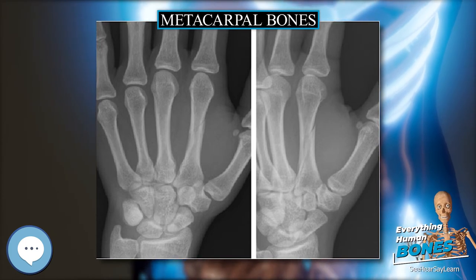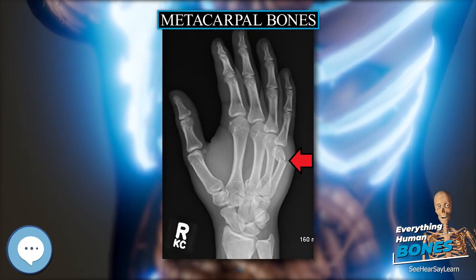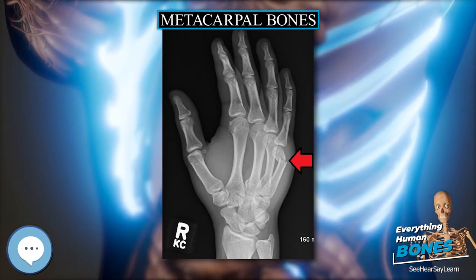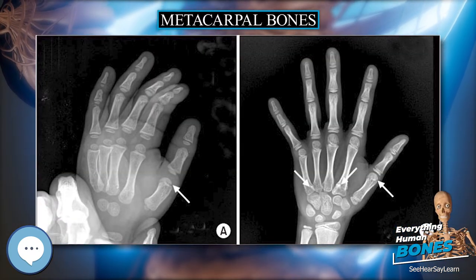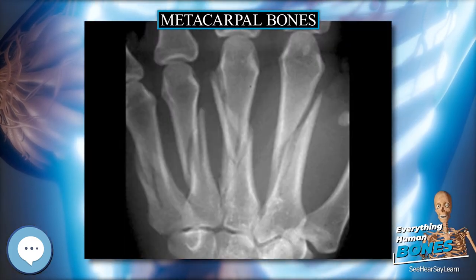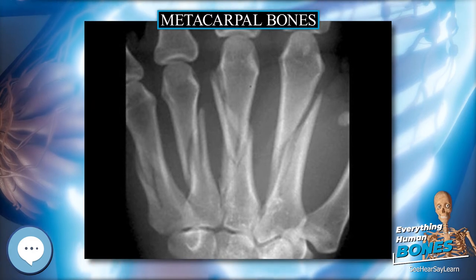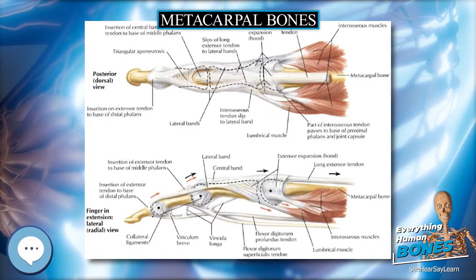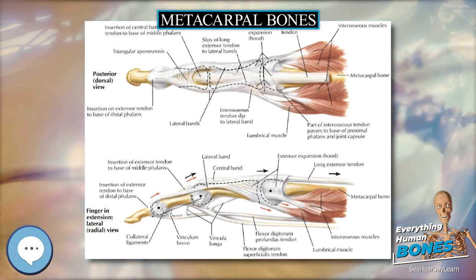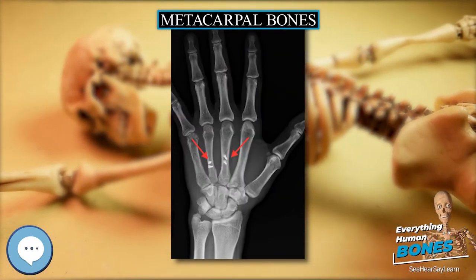Articulations: besides the metacarpophalangeal joints, the metacarpal bones articulate by carpometacarpal joints. Insertions: extensor carpi radialis longus and brevis both insert on the base of metacarpal 2, assisting with wrist extension and radial flexion of the wrist. Extensor carpi ulnaris inserts on the base of metacarpal 5, extends and fixes the wrist when digits are being flexed, and assists with ulnar flexion of the wrist.